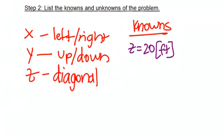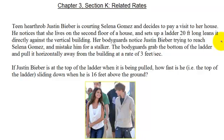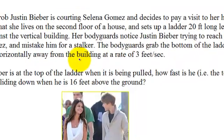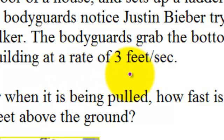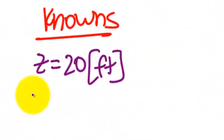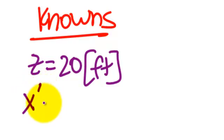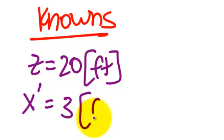The next part of the question says the bodyguards grab the bottom of the ladder and pull it horizontally away from the building at a rate of 3 feet per second. Two things here: one, it's going horizontally — that's the x-axis. Second, instead of a value like 3 feet, it's actually a rate of 3 feet per second. So the quantity being horizontal is going to be x, and because it's a rate, we're going to call this x prime equals 3 feet per second.